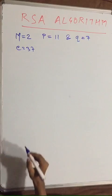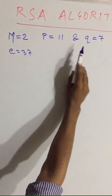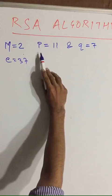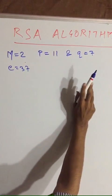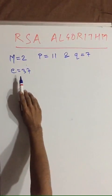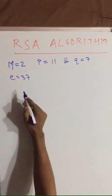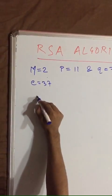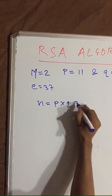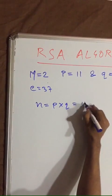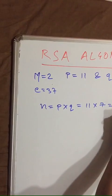In this example, as you can see, message m is equal to 2. P and Q are prime numbers where P is equal to 11 and Q is equal to 7. We have taken e equal to 37. The first step: n equals P times Q, which equals 11 times 7, which equals 77.